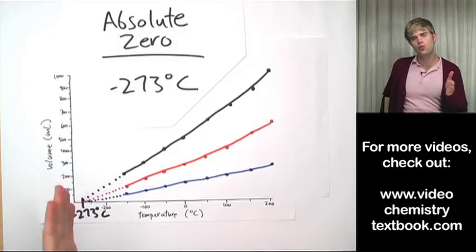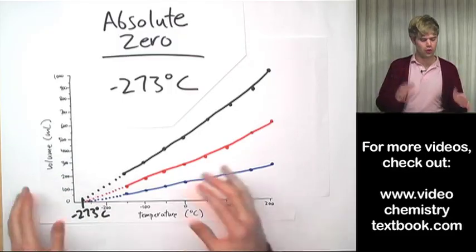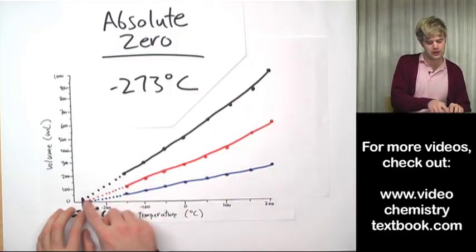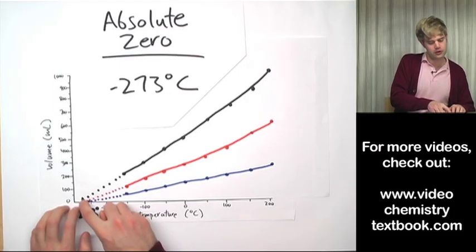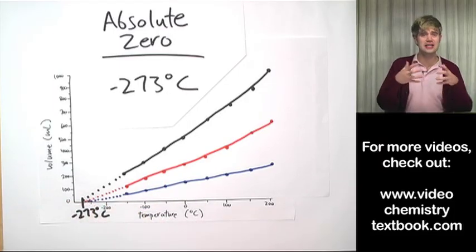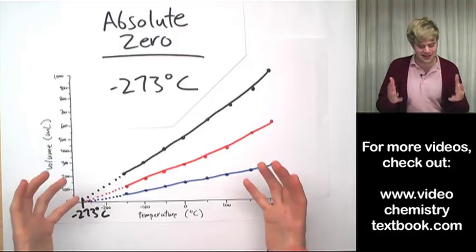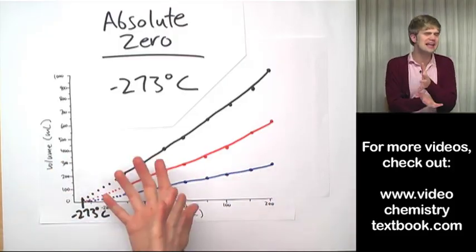Now the reason why people say that absolute zero is the coldest possible temperature is because when you look at this graph, all the volumes come to zero here and it would be ridiculous. It would be like impossible for a gas to have a negative volume,